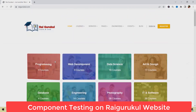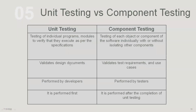This is the difference between CTIS and CTIL. Unit testing is performed by the developer based on individual program modules to verify they execute as per specifications, whereas component testing is performed by the testing team with or without isolating other components. Unit testing validates design documents, while component testing validates test requirements and use cases. Unit testing is performed first and component testing is performed after unit testing.